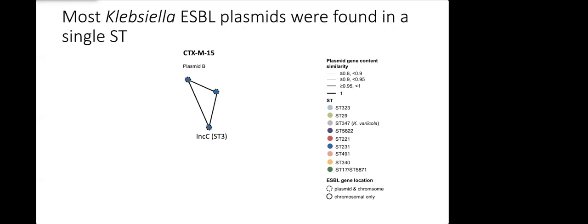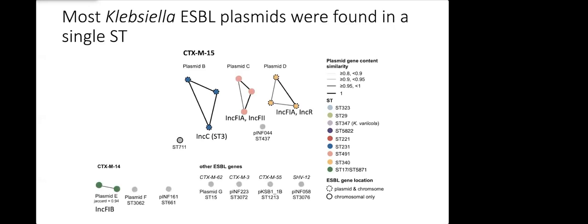You can see that all three of these genomes have the same plasmid but they're also all the same color so they all belong to the same sequence type. Generally this is what we saw for many of our plasmids. They either belong to the same sequence type or they were just a single strain that just carried that plasmid.